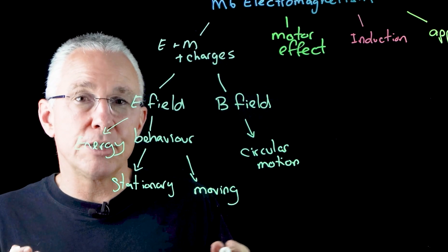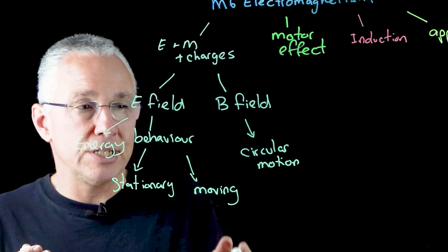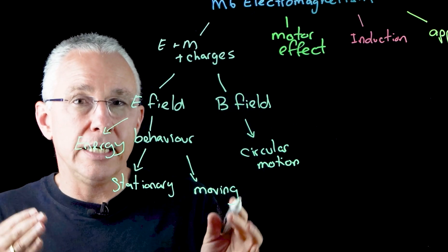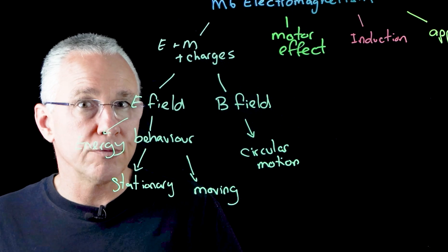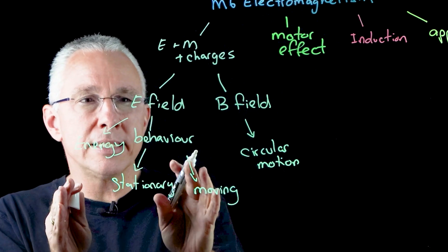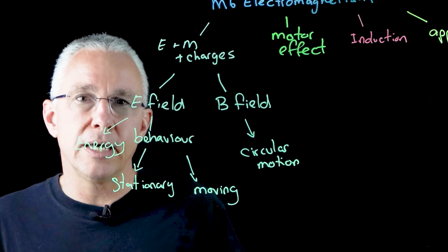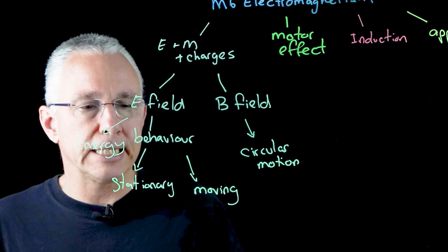And that allows you to establish relationships between the mass, the radius and the velocity, and obviously the magnetic field strength in various situations, including of course, the charge itself. And lastly, you need to be understanding how these two behaviors are different in terms of the electric field effect and the magnetic field effect.